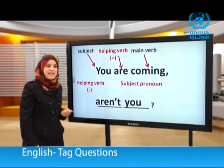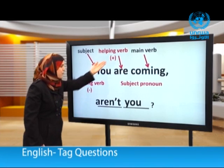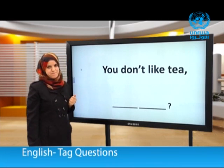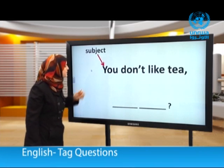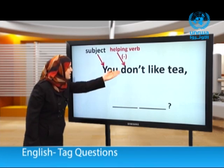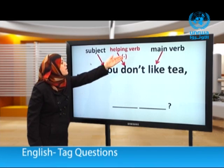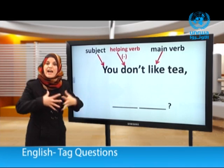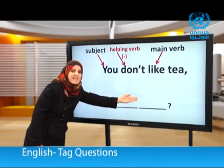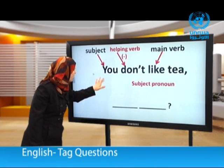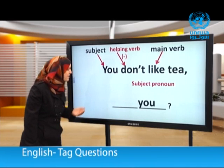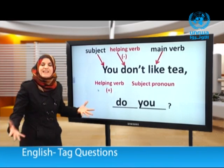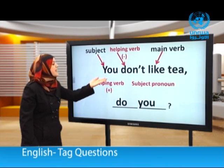Another example: You don't like tea. 'You' is the subject, 'don't' is the helping verb and it is negative, 'like' is the main verb. To form the tag question, we begin with the subject pronoun 'you' — small letter. The helping verb is negative here, so we need it positive. The tag question is: do you? So: You don't like tea, do you?